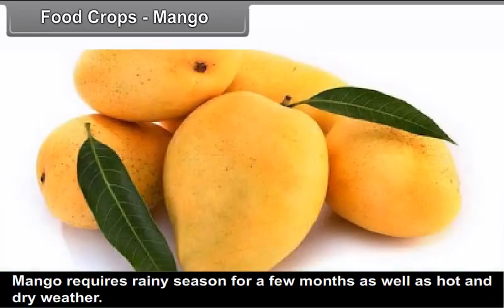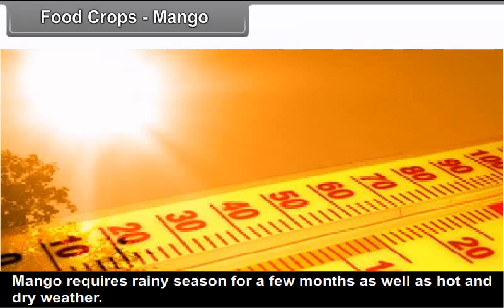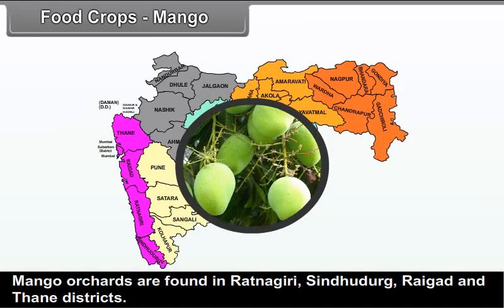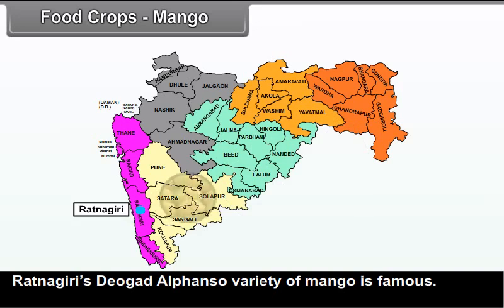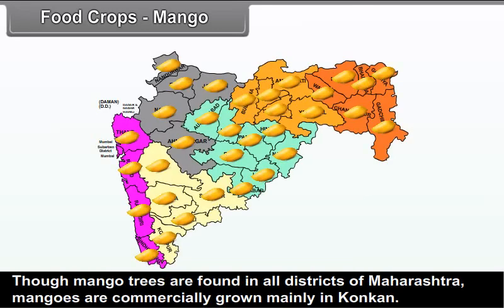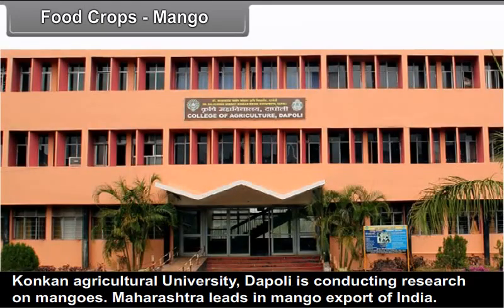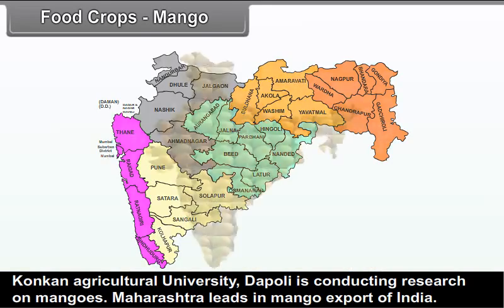Mango: Mango requires a rainy season for a few months as well as hot and dry weather. Mango orchards are found in Ratnagiri, Sindhudurg, Raigad, and Thane districts. Ratnagiri's Devgad Alphonso variety of mango is famous. Though mango trees are found in all districts of Maharashtra, mangoes are commercially grown mainly in Konkan. Konkan Agricultural University, Dapoli, is conducting research on mangoes. Maharashtra leads in mango export in India.